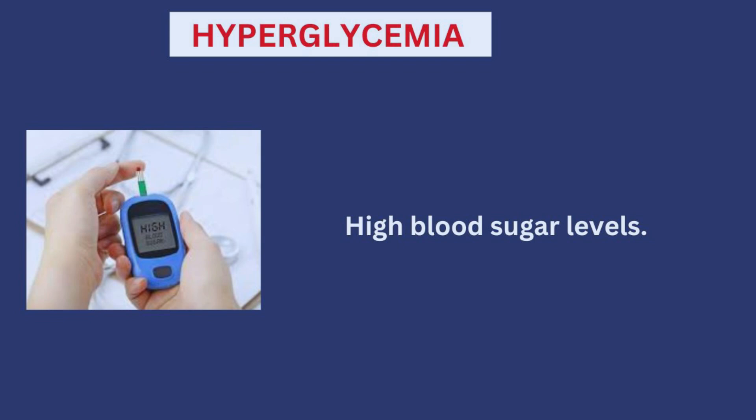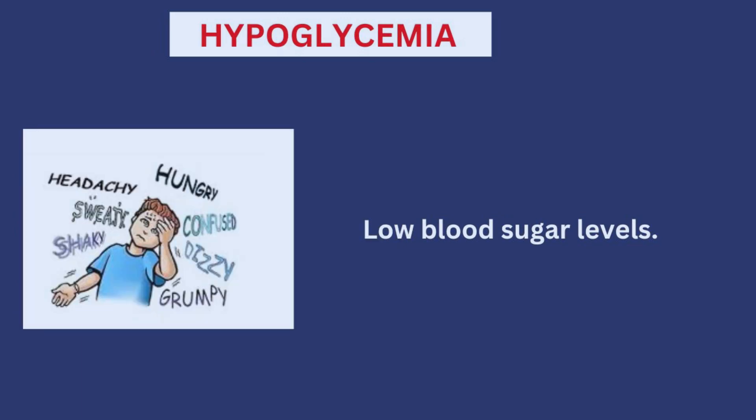Next is hyperglycemia, which refers to high blood sugar levels in a person. The direct opposite is hypoglycemia, which refers to low blood sugar.